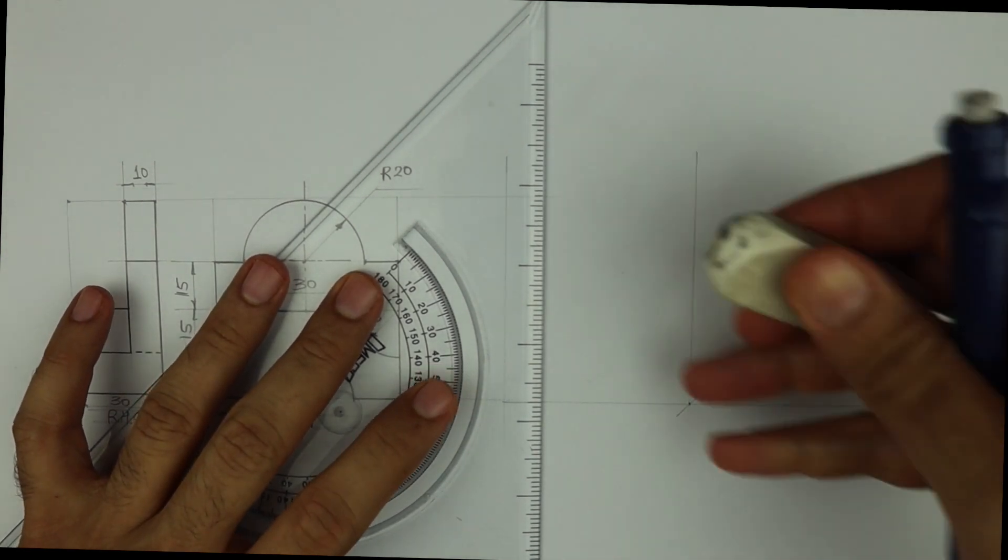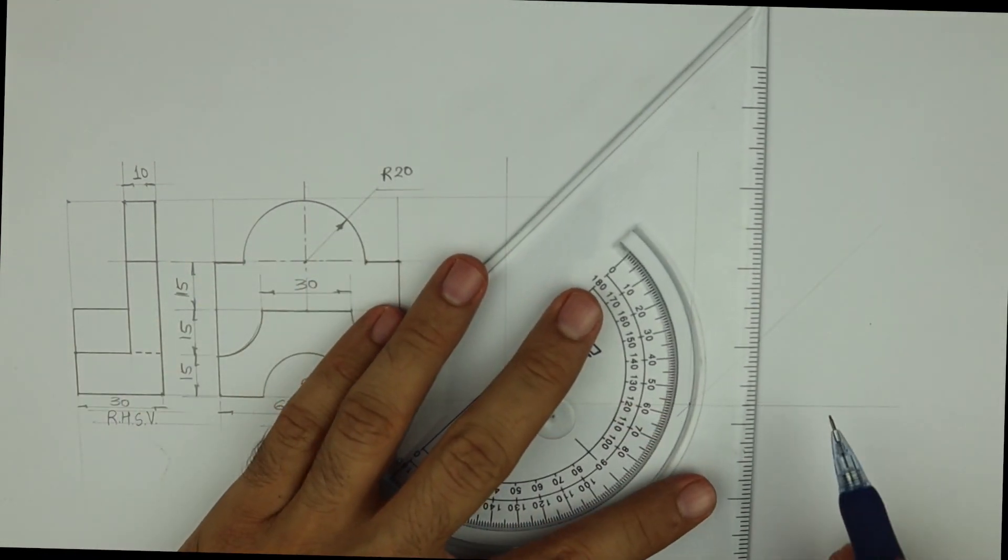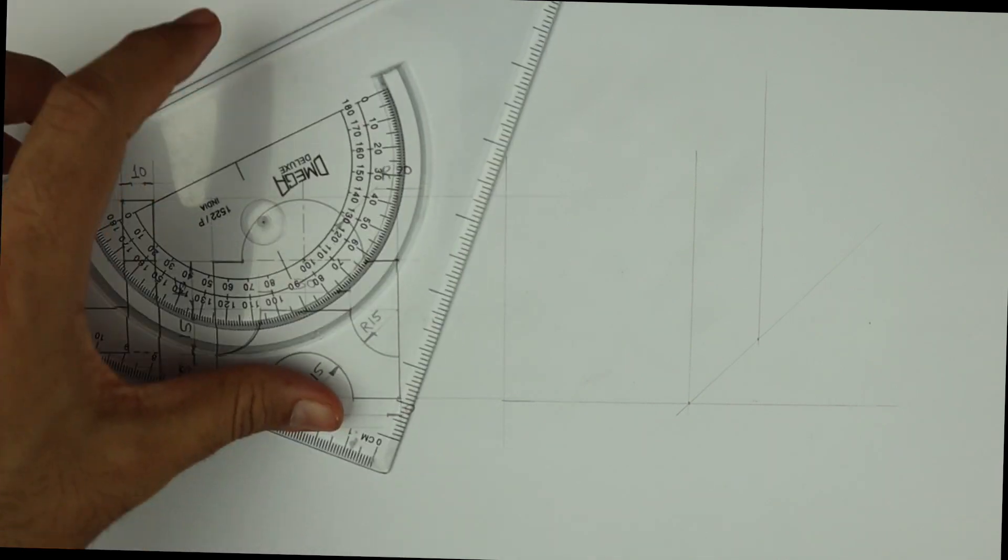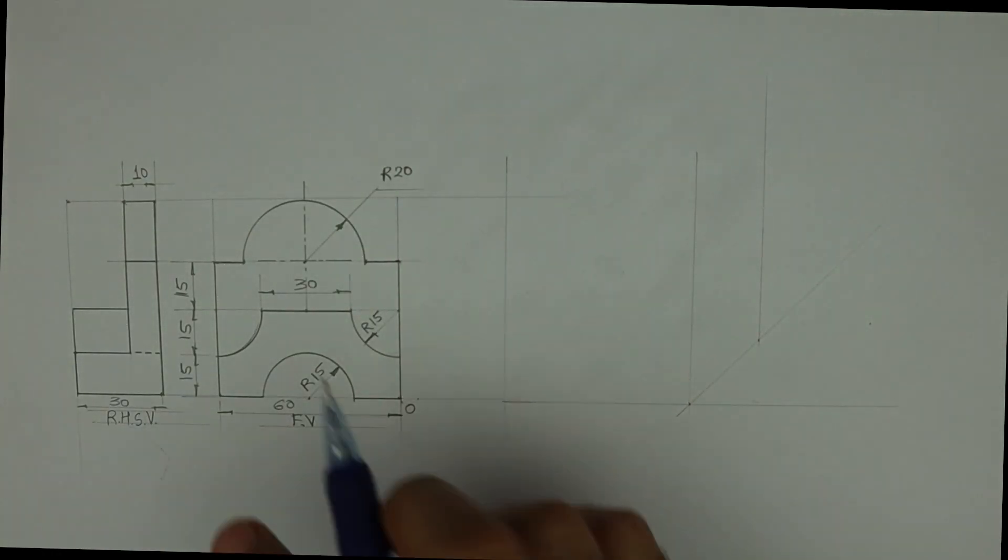In exam, if they will give you 30 degree, then you take 30 degree. If they will give you 60 degree, that time you can take 60 degree. But by default we take 45 degree.